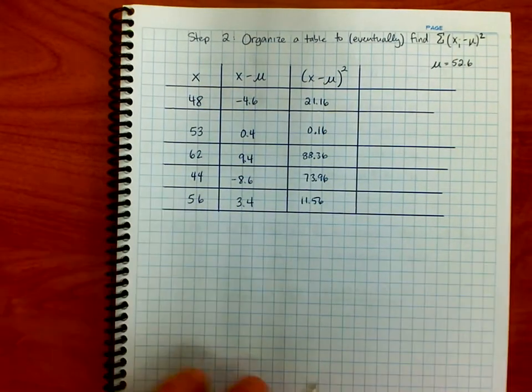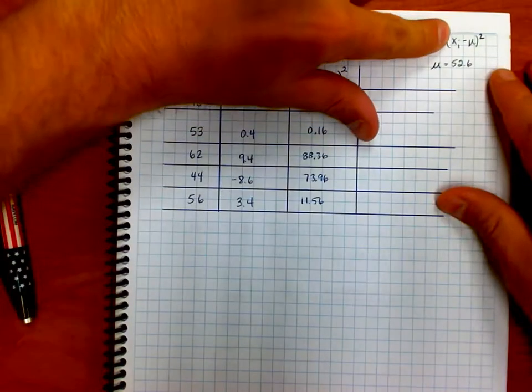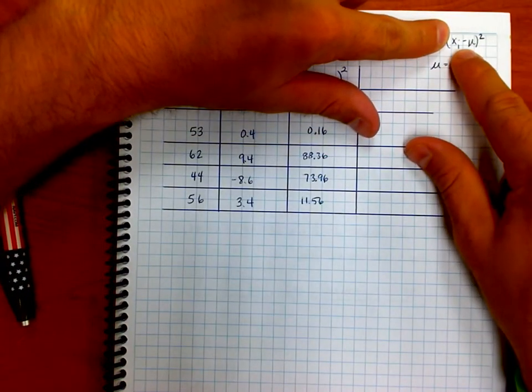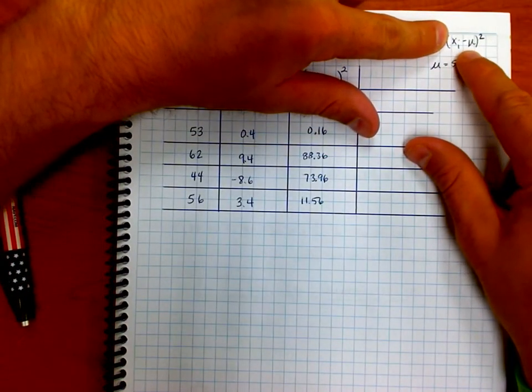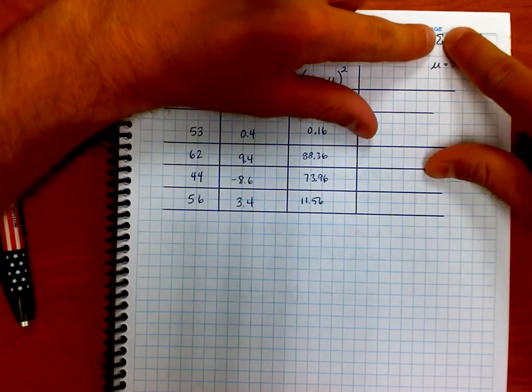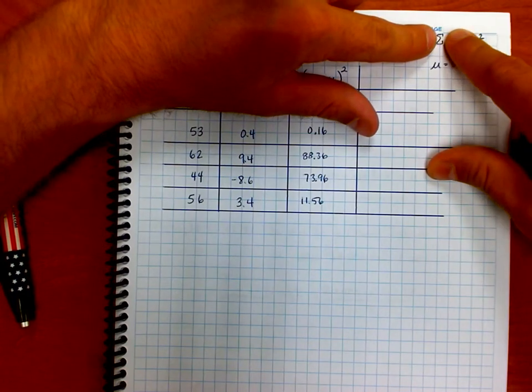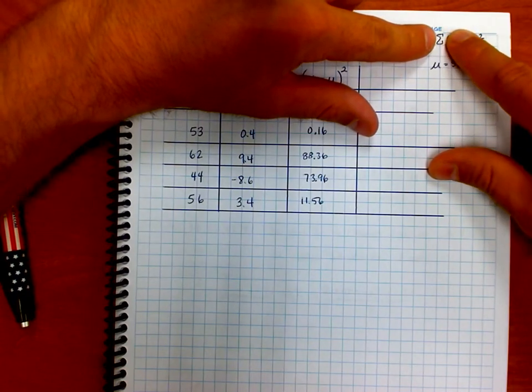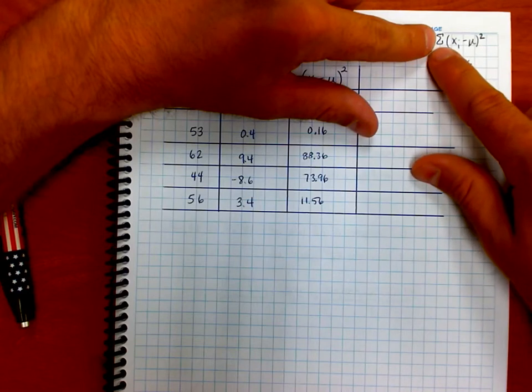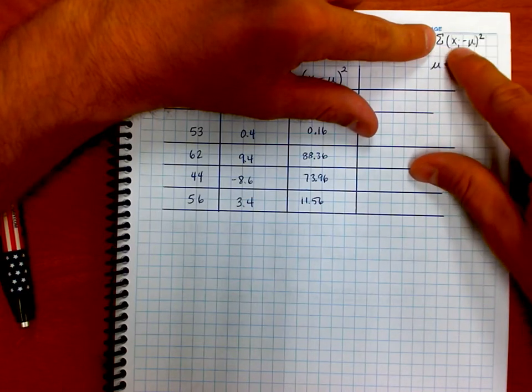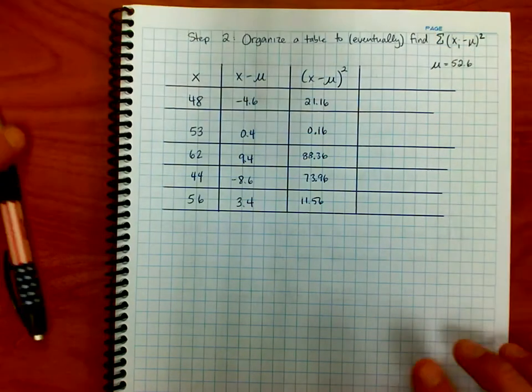So now, what I've done as far as the formula goes is I've found then each of the individual data points, I've taken it, subtracted the mean, and squared it. Now comes this little symbol here. That's summation, Greek letter sigma. Again, follow up from the last video. If you haven't watched it, you need to go watch it. And all it means is I'm going to take all of the values that I had here and I'm going to add them together.